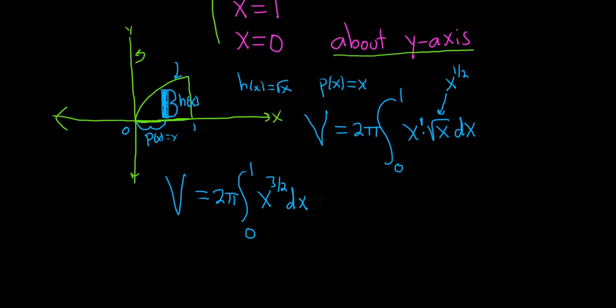Now we'll go ahead and integrate. So this is 2 pi using the power rule. So 3 halves plus 1 is really 3 halves plus 2 halves, which is 5 halves. So we get x to the 5 halves. And when we divide by 5 halves, we really multiply by 2 fifths. And we're going from 0 to 1.